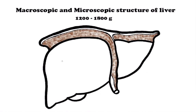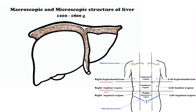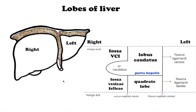The liver is the largest digestive gland, weighing on average 1200 to 1800 grams. It lies under the diaphragm in the right upper abdomen and mid-abdomen and extends to the left upper abdomen. Anatomically, the liver has 4 lobes: right, left, caudate, and quadrate lobe.